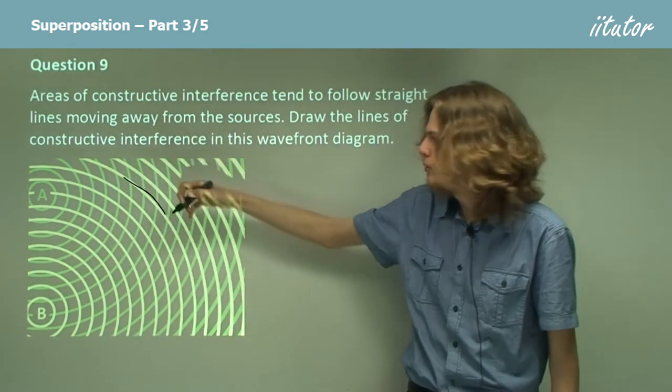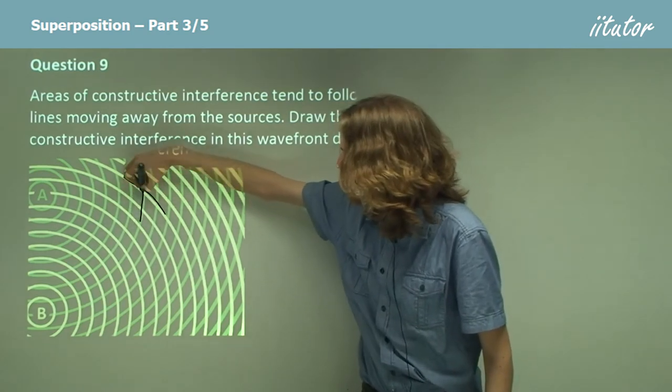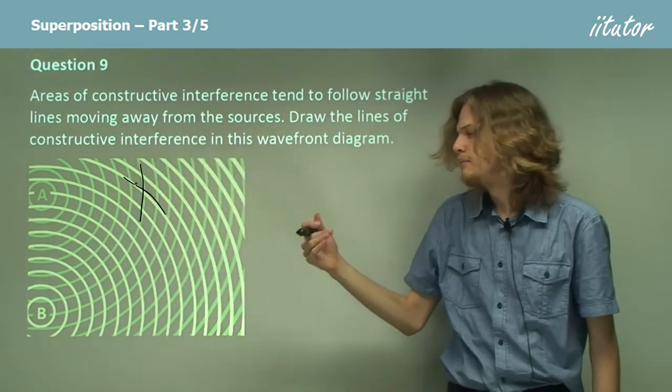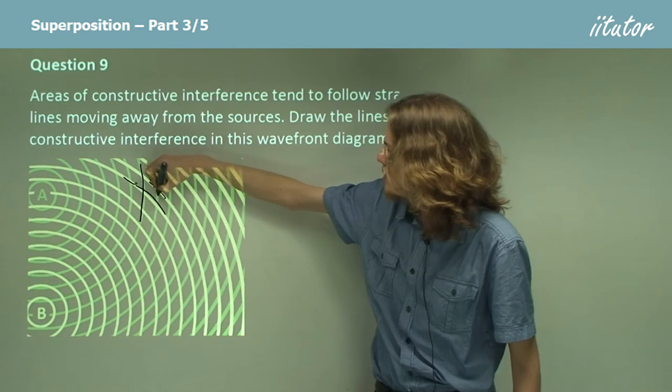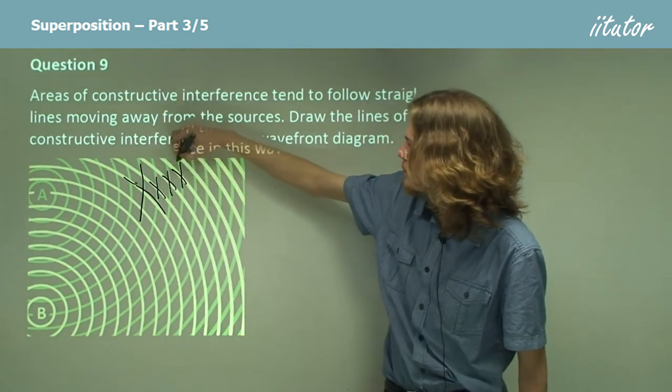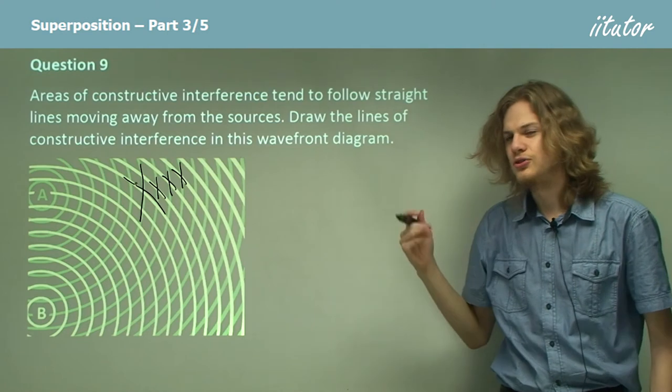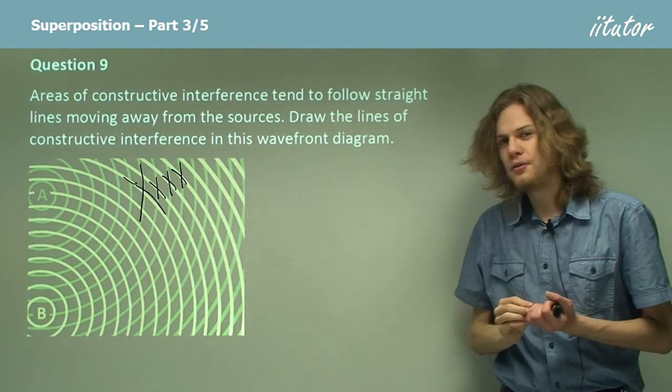This yellow line for example crosses over this green line right. We can see that this is going to keep happening all the way out. What the question is asking us to do is draw a line through these crosses.